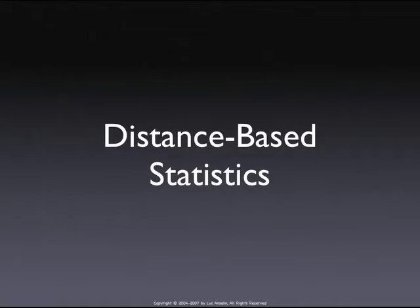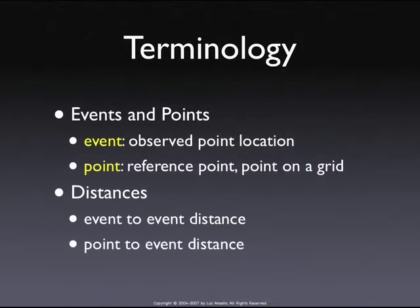Now we're moving back to clustering, interested in overall characteristics of the pattern as such. Under spatial randomness, because we have this homogeneous Poisson distribution, we can derive regularities about how far these events could be from each other. Whether you focus on how many events there are in a particular area, or you look at how far these events are from each other, it's just two sides of the same coin.